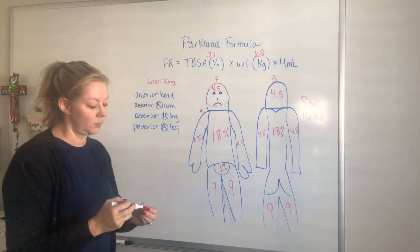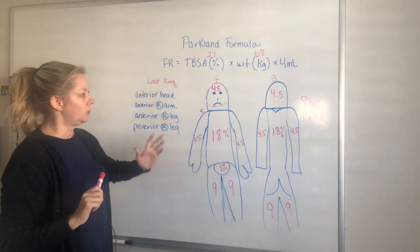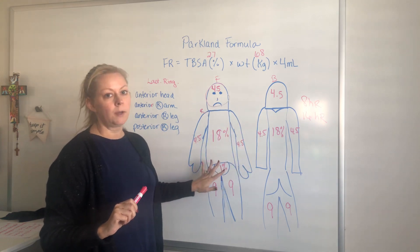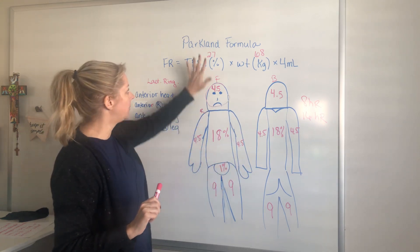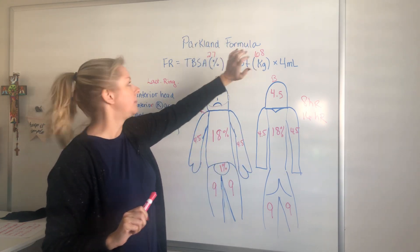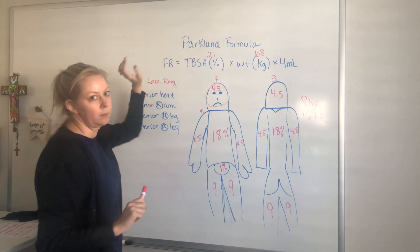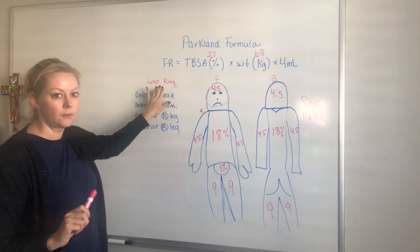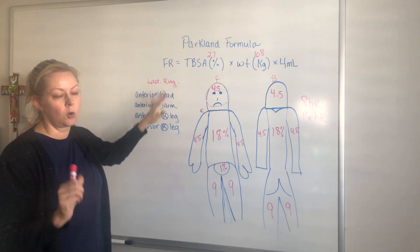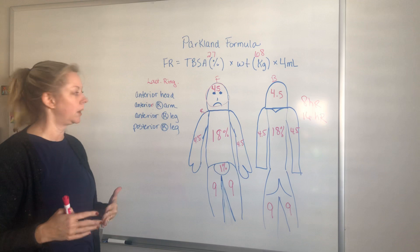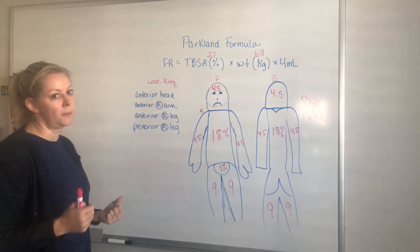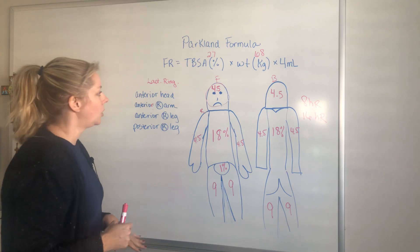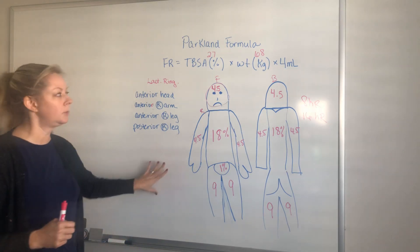It's basically a 24-hour fluid replacement we need to give. We determine that by figuring out the percentage of total body surface area burned and then plug it into the Parkland formula to get their fluid replacement, which is lactated Ringer's — the best choice to help balance the intravascular and extracellular space.